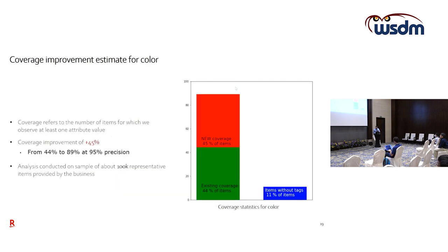In terms of coverage — meaning an item has at least one attribute value available — after applying our model we were able to improve coverage by 45% in the Rakuten Ichiba fashion subcategory. This analysis was based on 100,000 sample items provided by the business team.